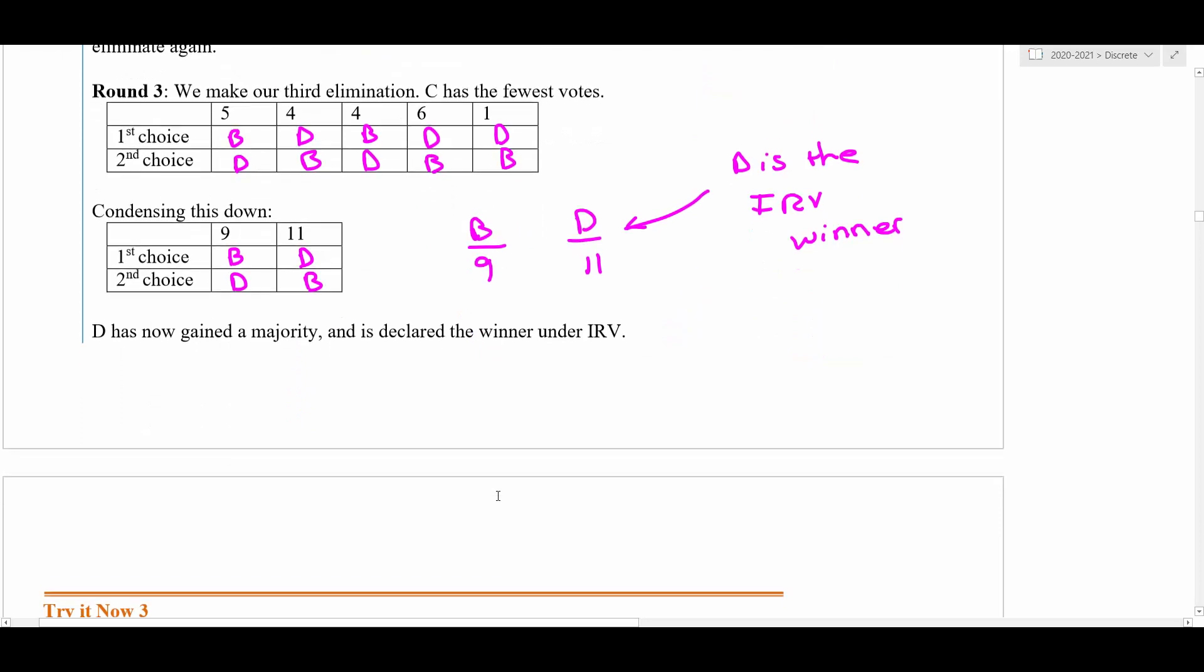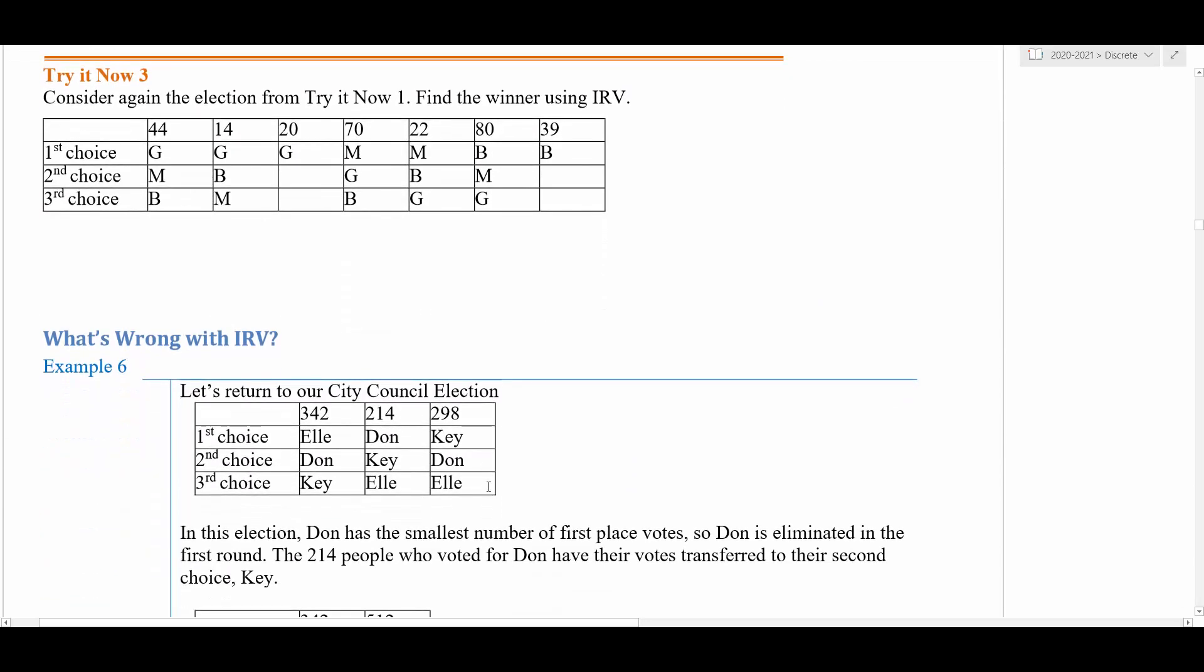We're going to do it one more time with this Try It Now 3. We've seen this preference schedule before. This one's kind of tricky because you had some voters that declined to offer a second or third choice, so we'll see what happens there.